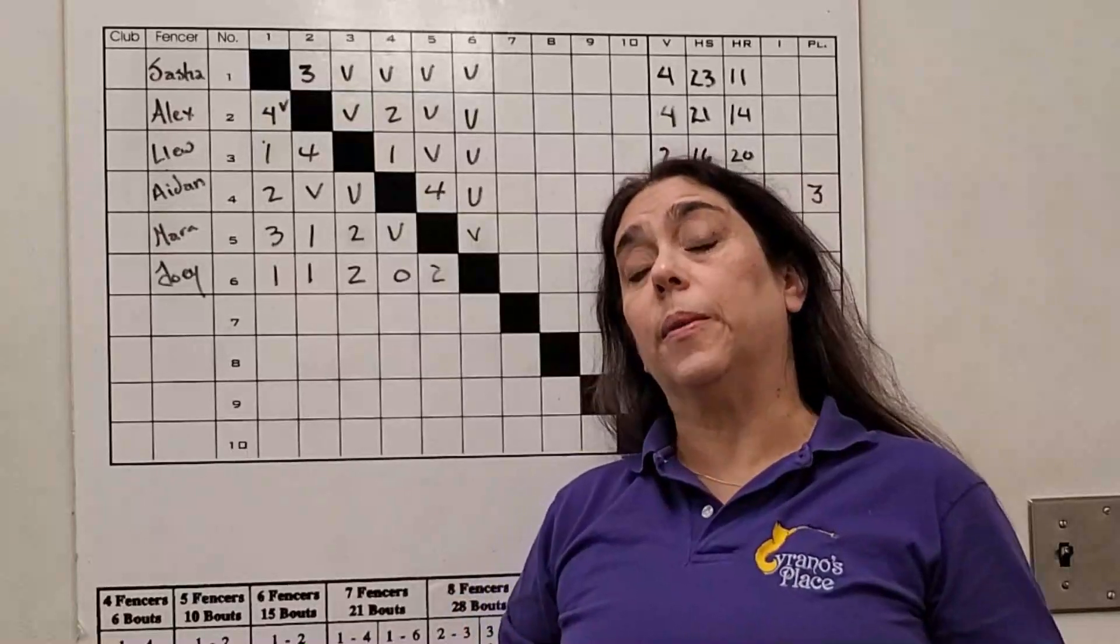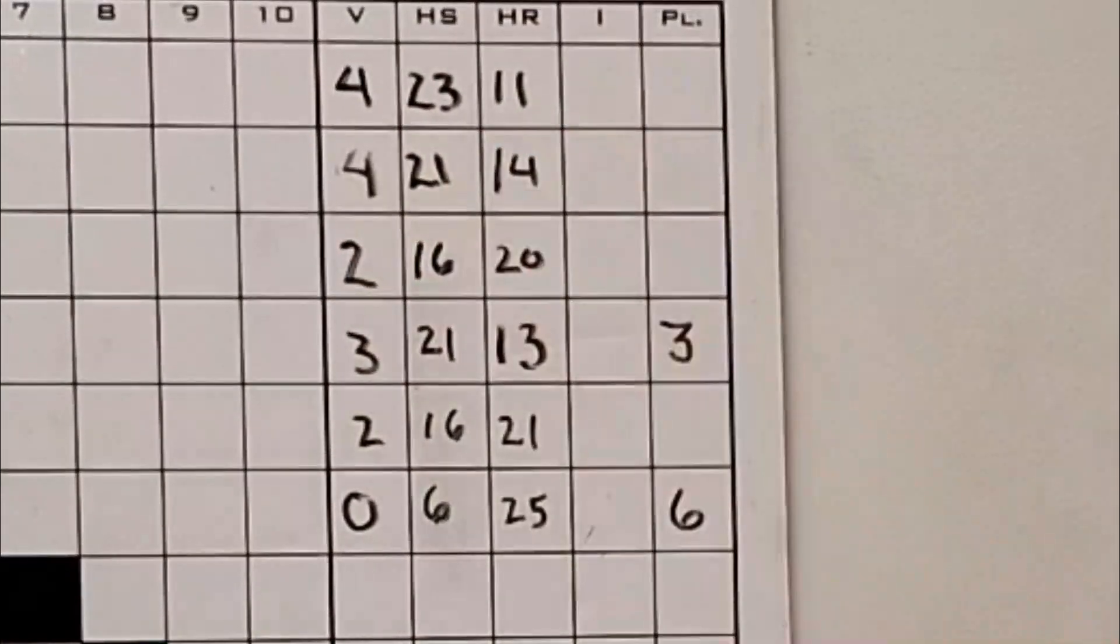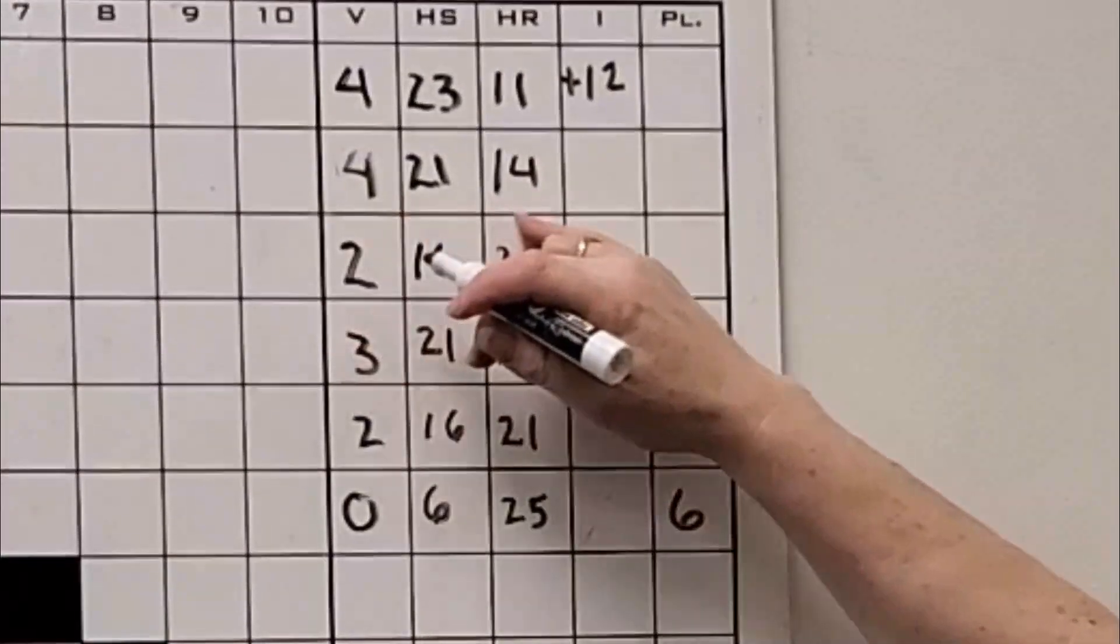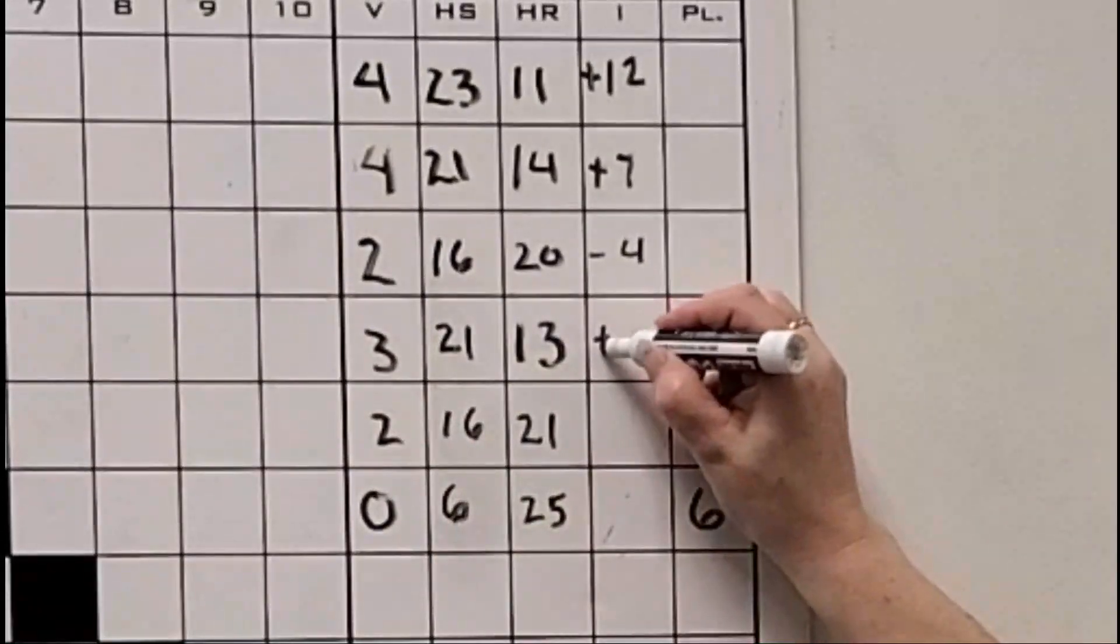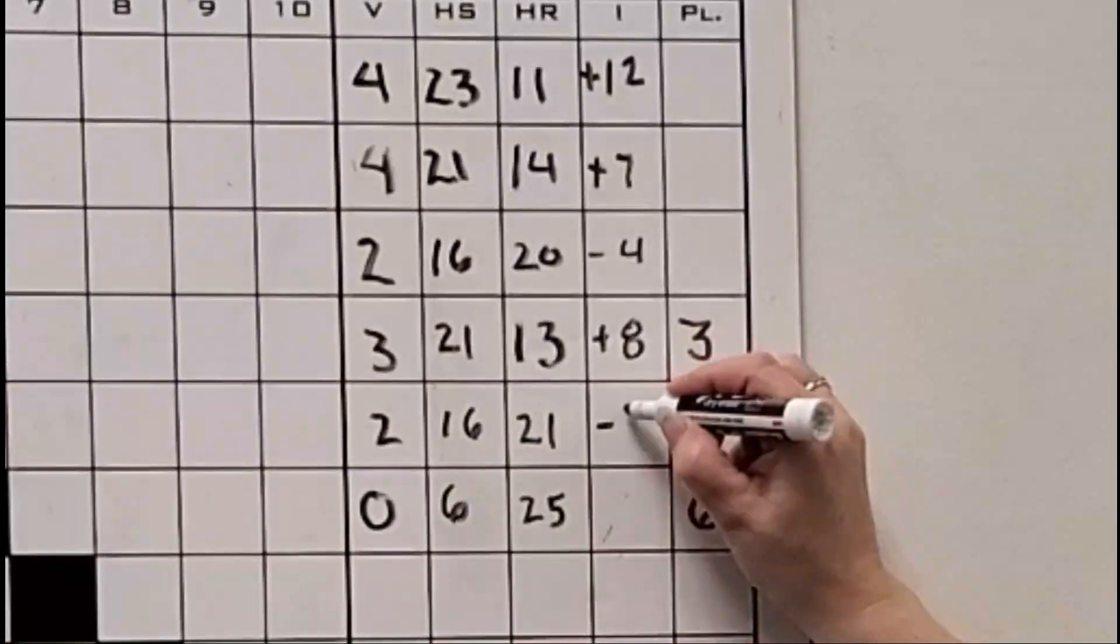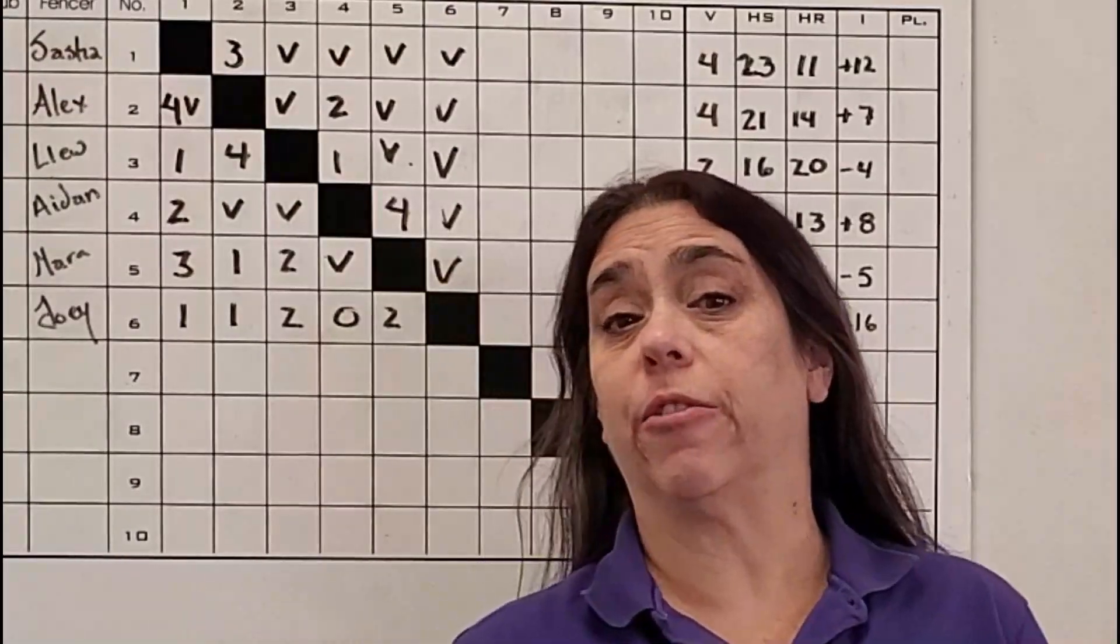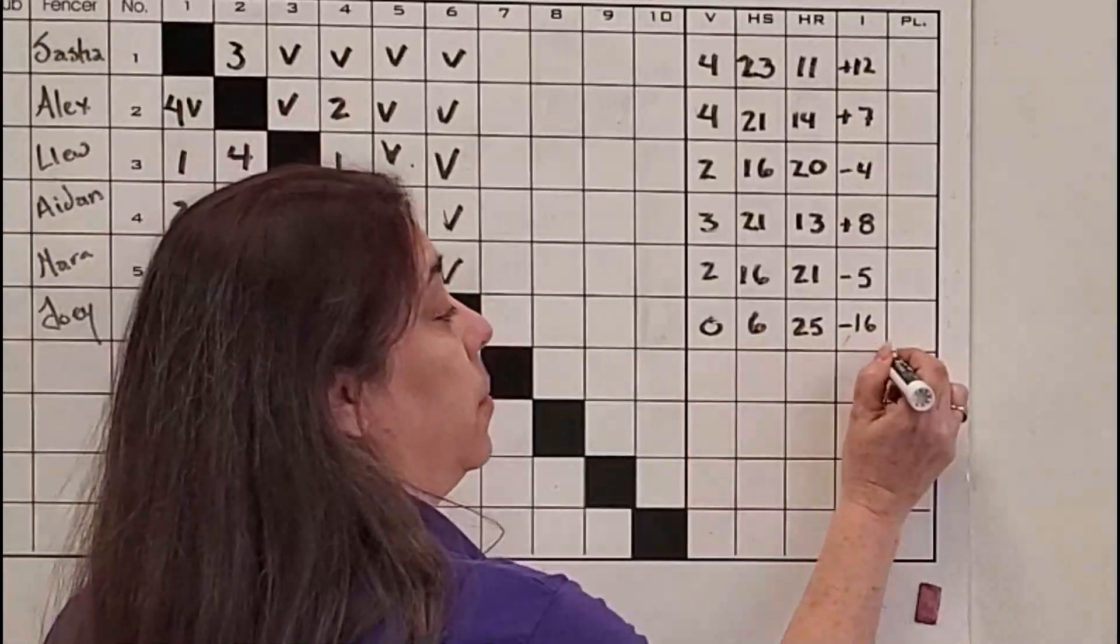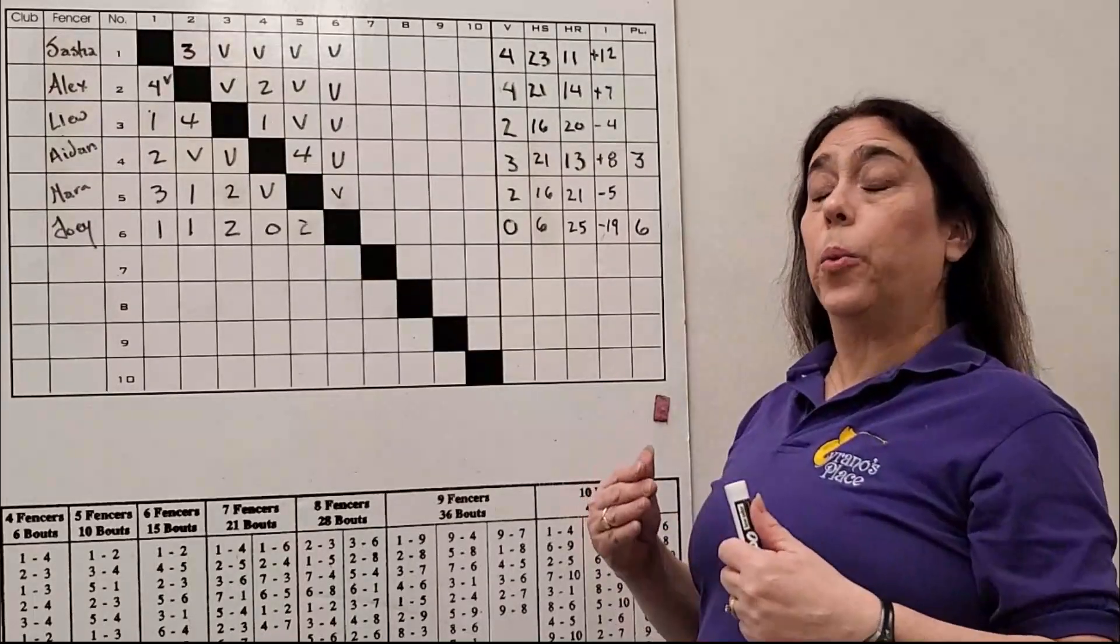Now that we've added up the hits sent and the hits received, we can take the difference to find out the indicator. The hits sent minus the hits received equals a plus twelve. We go down the line. One way to check your math and make sure you've done your indicator correctly is when you add up all the numbers on the indicator, it should add up to zero.